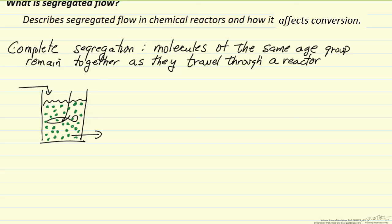Well, the way we might model this, if we assume we have complete segregation and we want to create a mathematical model, is to think of the reactor as consisting of a large number of plug flow reactors in parallel.